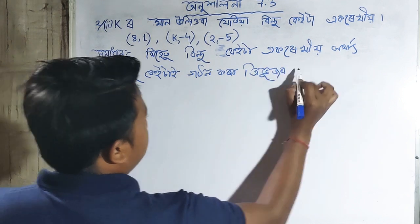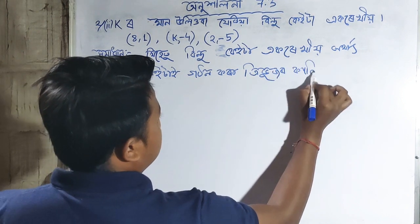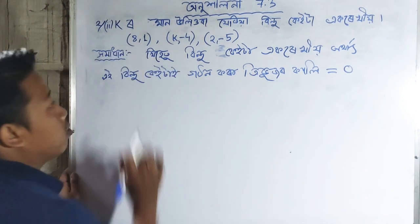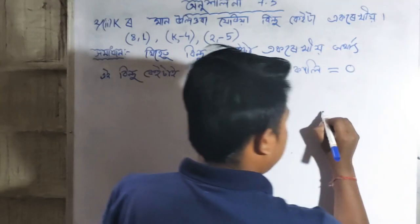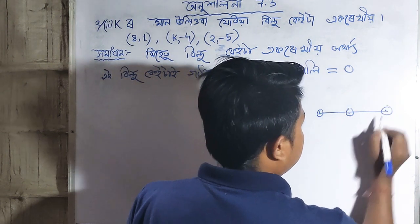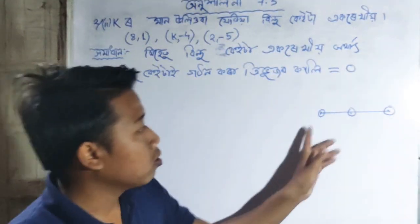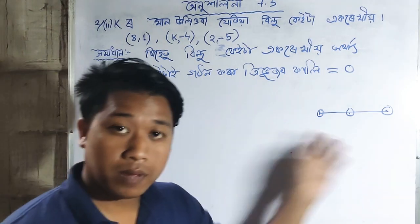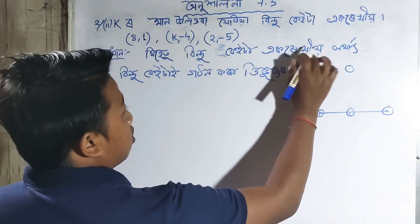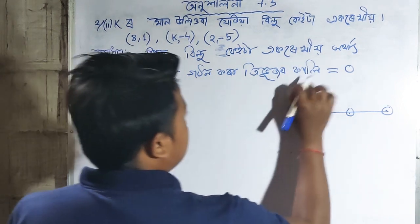For three points to be collinear, the area formed by these three points must equal zero. If the three points are collinear, then the value we calculate will be zero. This is the key condition.